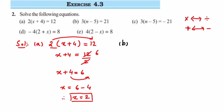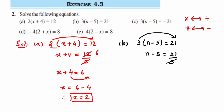The second question: 3 into n minus 5 is equal to 21. Again, 3 is in multiplication, so when transposed to the other side it becomes division. So n minus 5 is equal to 21 upon 3. Cancel 3 and 21 to get 7, so n minus 5 is equal to 7. Now take minus 5 to the other side — minus becomes plus — so n is equal to 7 plus 5, which is 12. Therefore n equals 12.